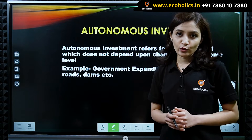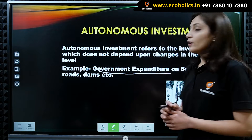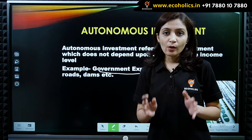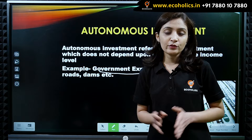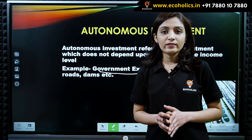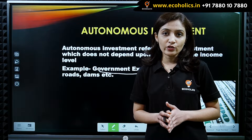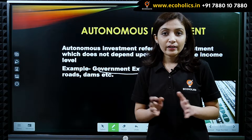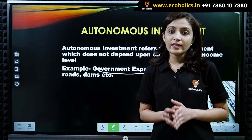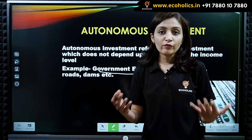An example of autonomous investment is government expenditure. Expenditure done by government on building schools, hospitals, roads, etc. are considered as autonomous investment. This is because such expenditures are incurred by government irrespective of income or profits. Government undertakes such expenditure not for profit motive but for promoting social welfare.